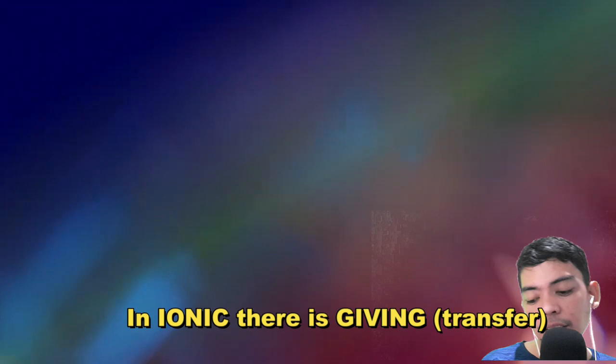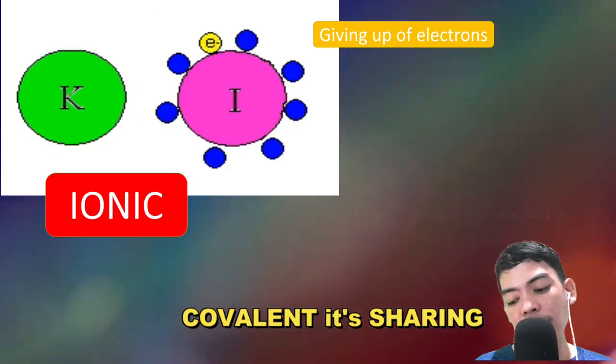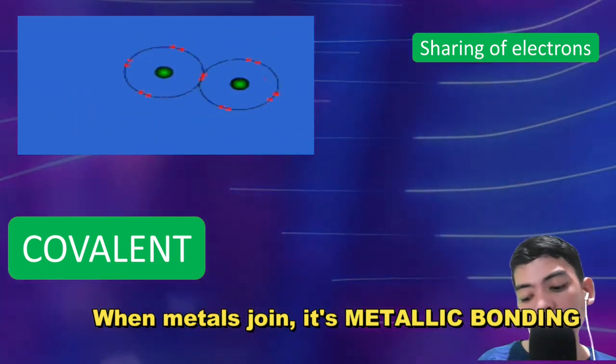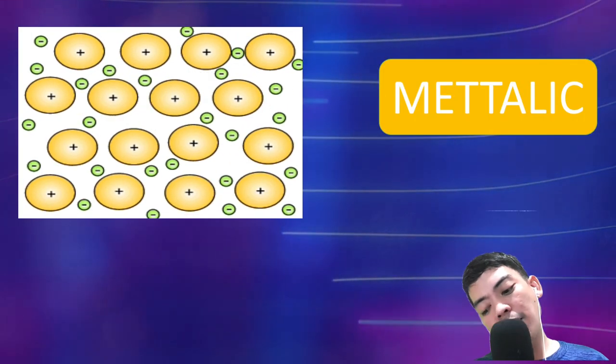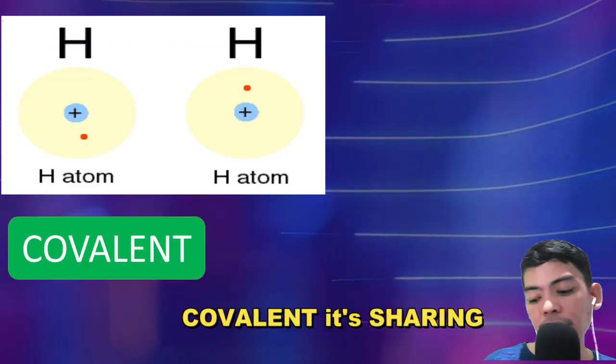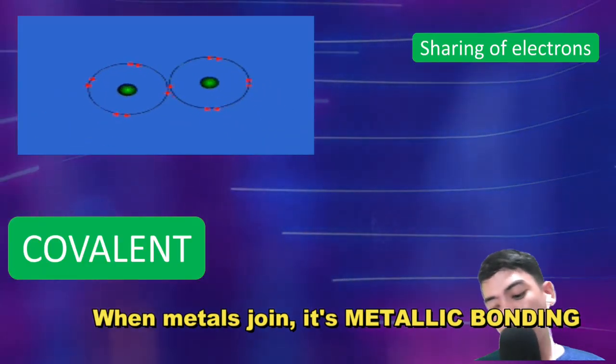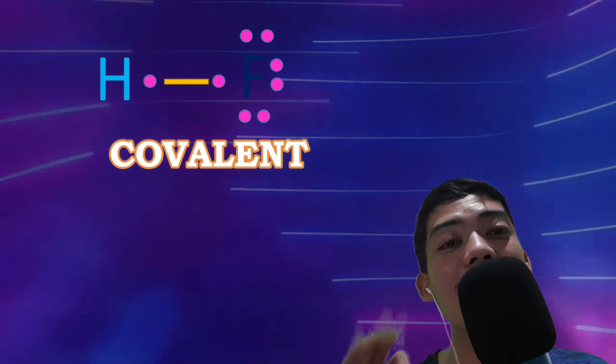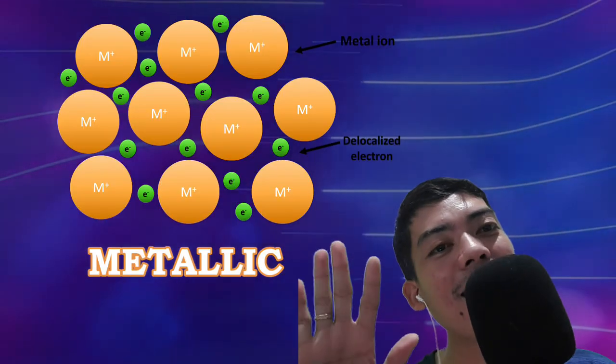Ionic, there is giving. Covalent, it's sharing. When metals join, it's metallic bonding. Take note of the three types of bonding: ionic, covalent, and metallic. Bye-bye!